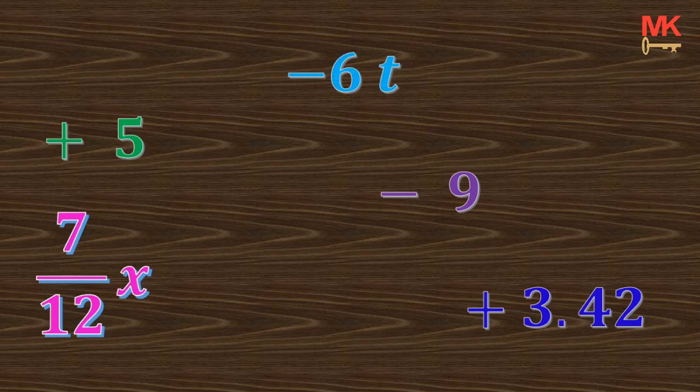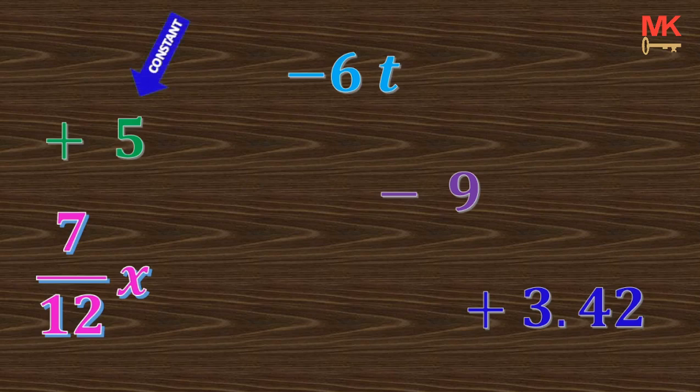Which of these terms is a constant term? Which of them is constant? A constant term does not carry any letter. So you can see that your positive 5 is a constant term because there is no letter attached to it.